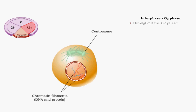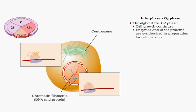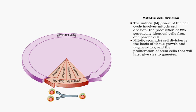Throughout the G2 phase of interphase, cell growth continues and enzymes and other proteins are synthesized. The mitotic phase of the cell cycle involves mitotic cell division, which is the production of two genetically identical cells from one parent cell. Mitotic cell division is the basis of tissue growth and regeneration and the proliferation of stem cells that will later give rise to gametes.